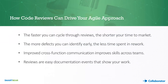In summary: if you can use your code reviews to drive your agile approach, the faster you cycle through those reviews, the shorter your time to market, the more defects you identify early, and the less time you spend on rework. Improving cross-functional communication benefits skills across teams. And reviews are easy documentation events — if you set them up right, they allow you to show your work without manually spending time documenting conversations. This is especially valuable if you're in a highly regulated industry. Now we're going to get into how Collaborator enables agile code and document reviews.